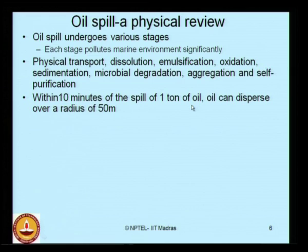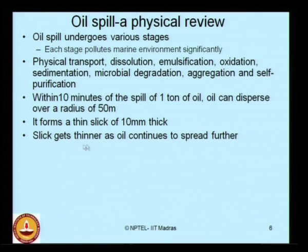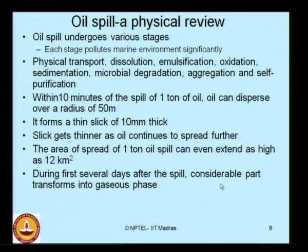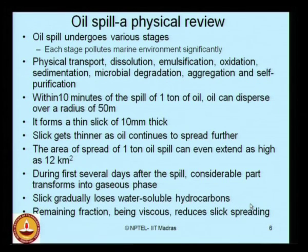Within 10 minutes of a spill of 1 ton of oil, the oil can disperse over a radius of over 50 meters. It first forms a thin slick of 10 mm layer — this is physical transport. The slick gets thinner as the oil continues to spread, potentially extending to about 12 square kilometers for 1 ton of oil. During the first several days after the spill, a considerable part of the oil transforms into gaseous phase. The slick gradually loses water-soluble hydrocarbons, and the remaining fraction becomes viscous, reducing further spreading.